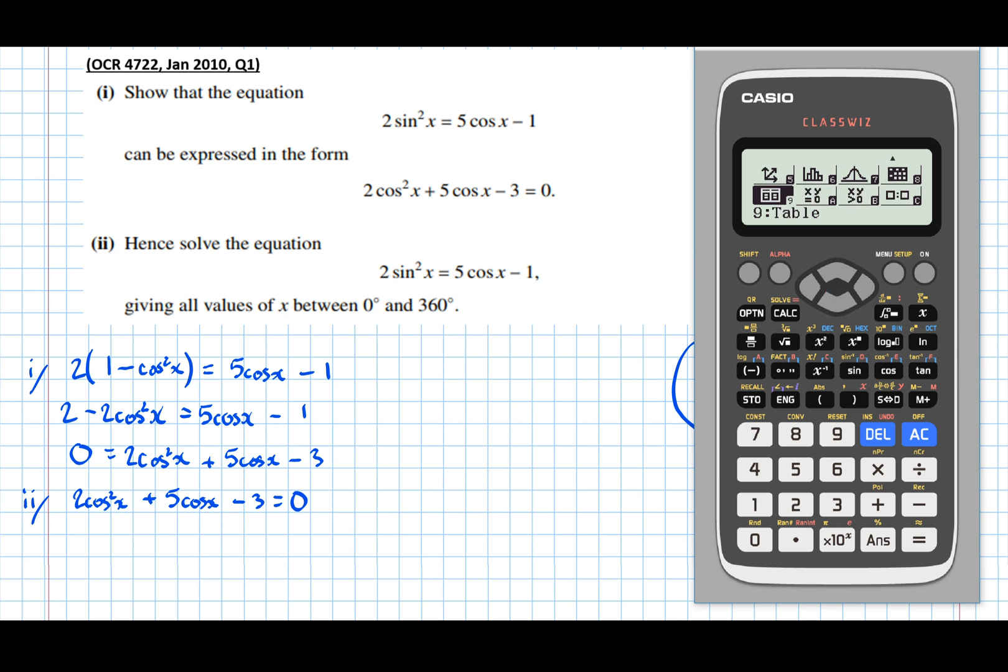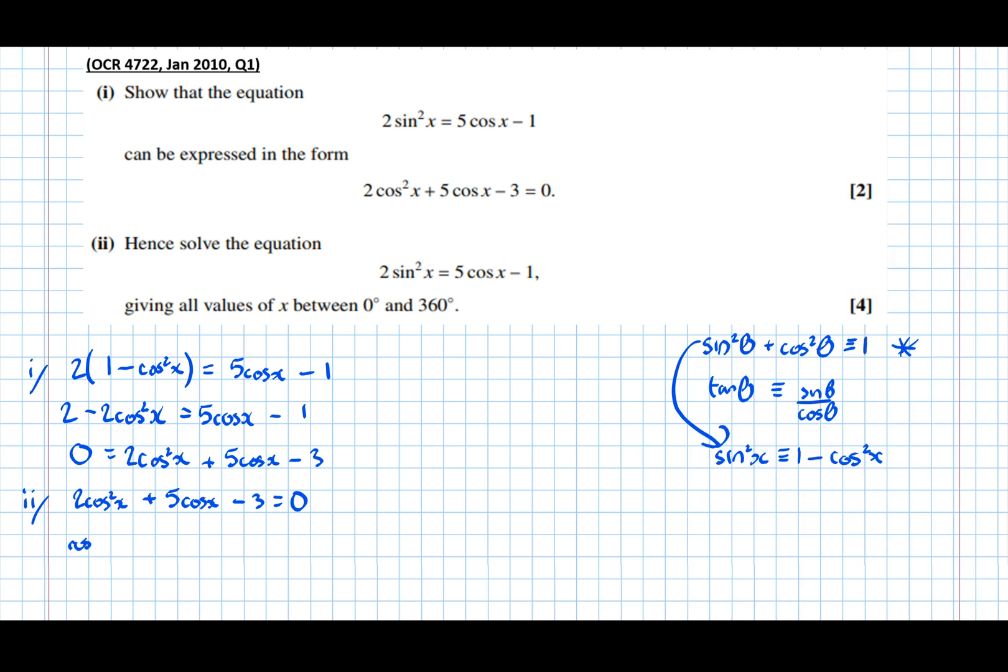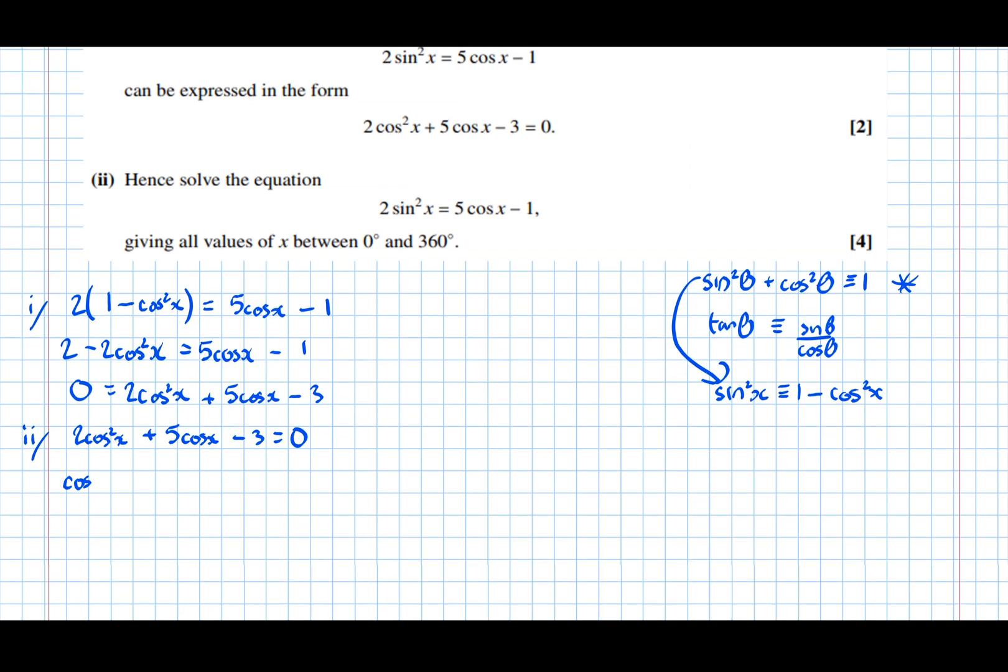The question doesn't ask us to show detailed reasoning or full working out, so we can go straight to the equation solver. So, polynomial of degree 2, and it's 2 squared term, 5 is the linear term, and minus 3 is the constant term. So, I get that cos x equals, in this case, 1 half. Make that a little bit neater. So, cos x equals 1 half.